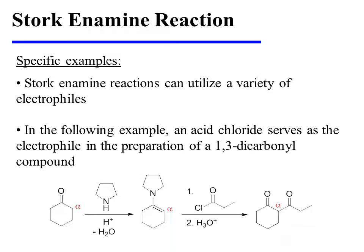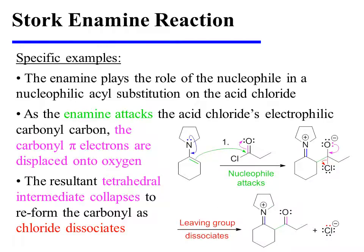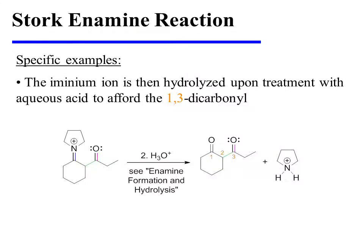Stork enamine reactions can utilize a variety of electrophiles. In the following example, an acid chloride serves as the electrophile in the preparation of a 1,3-dicarbonyl compound. Cyclohexanone is first converted to an enamine, and it is the enamine that plays the role of the nucleophile in a nucleophilic acyl substitution on the acid chloride. As the enamine attacks the acid chloride's electrophilic carbonyl carbon, the carbonyl pi electrons are displaced onto oxygen. This results in the formation of a tetrahedral intermediate, which collapses so as to expel chloride as the carbonyl reforms. The aminium ion is then hydrolyzed upon treatment with aqueous acid to afford the 1,3-dicarbonyl product.